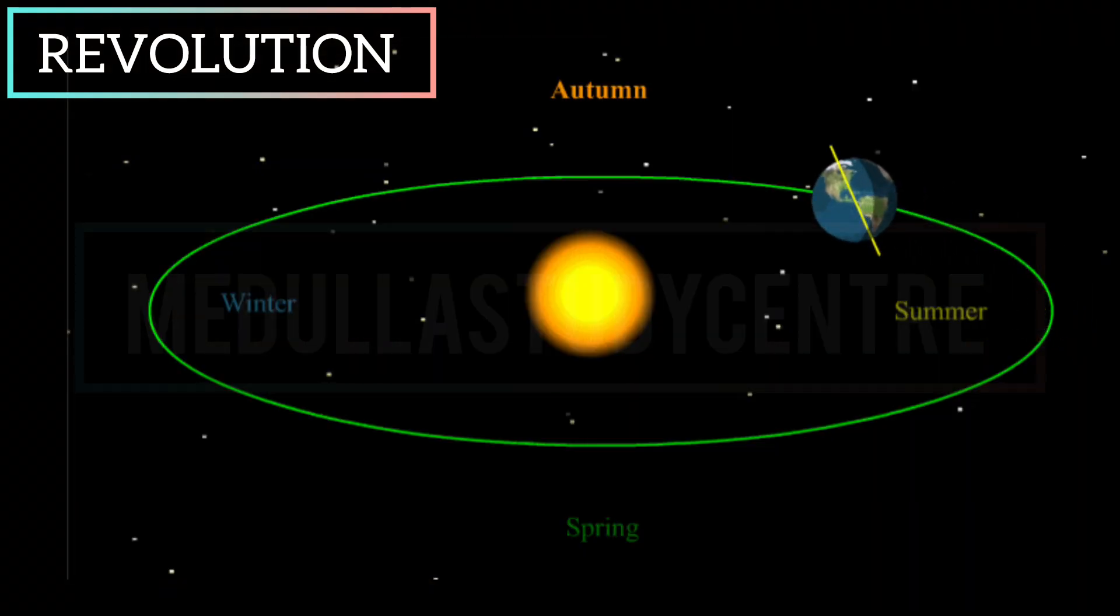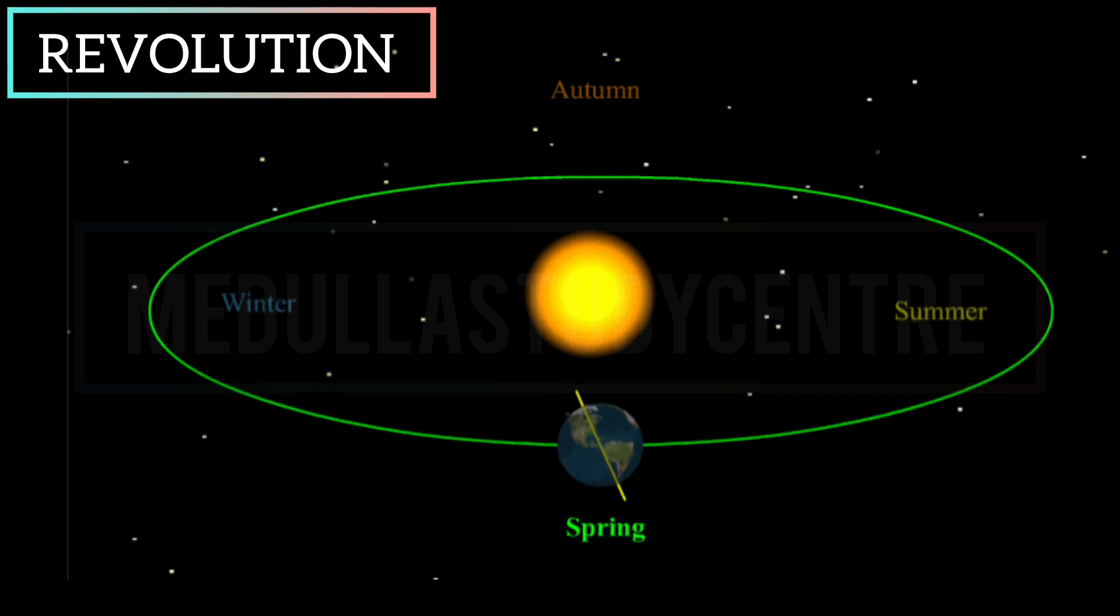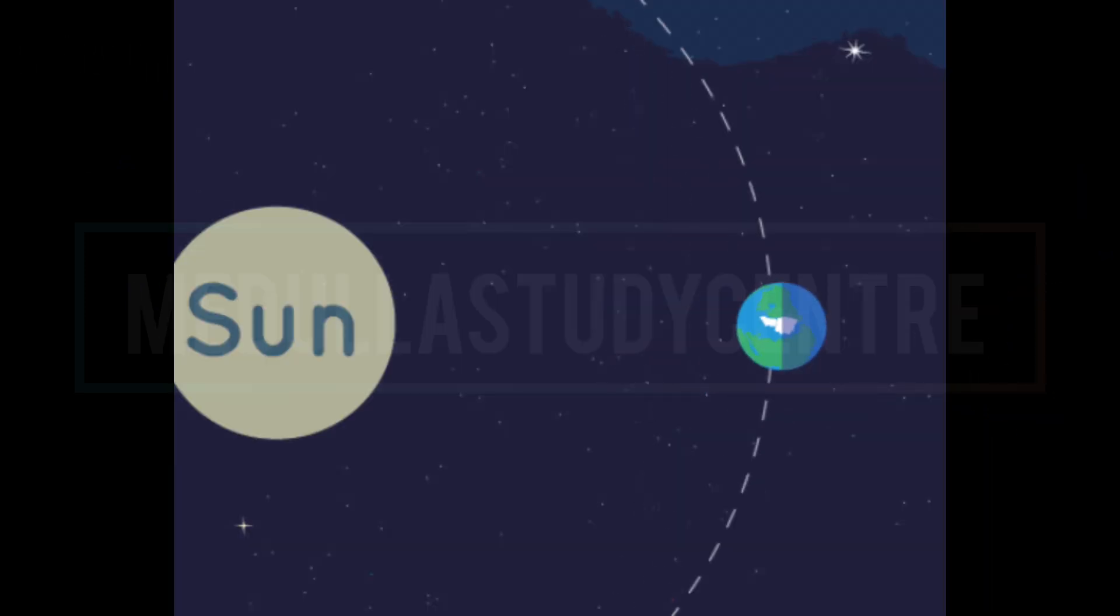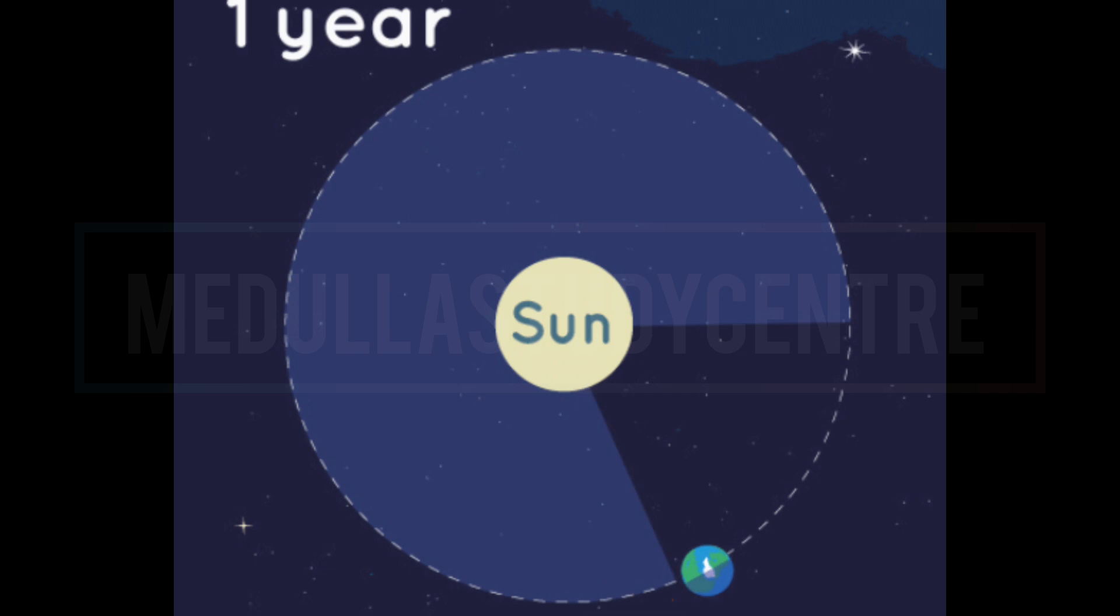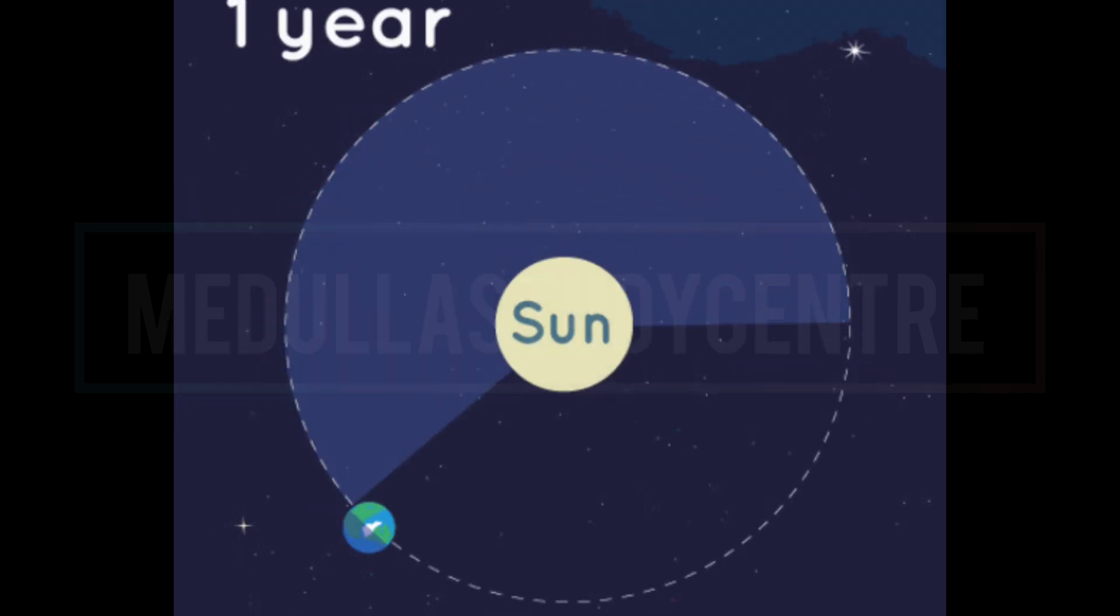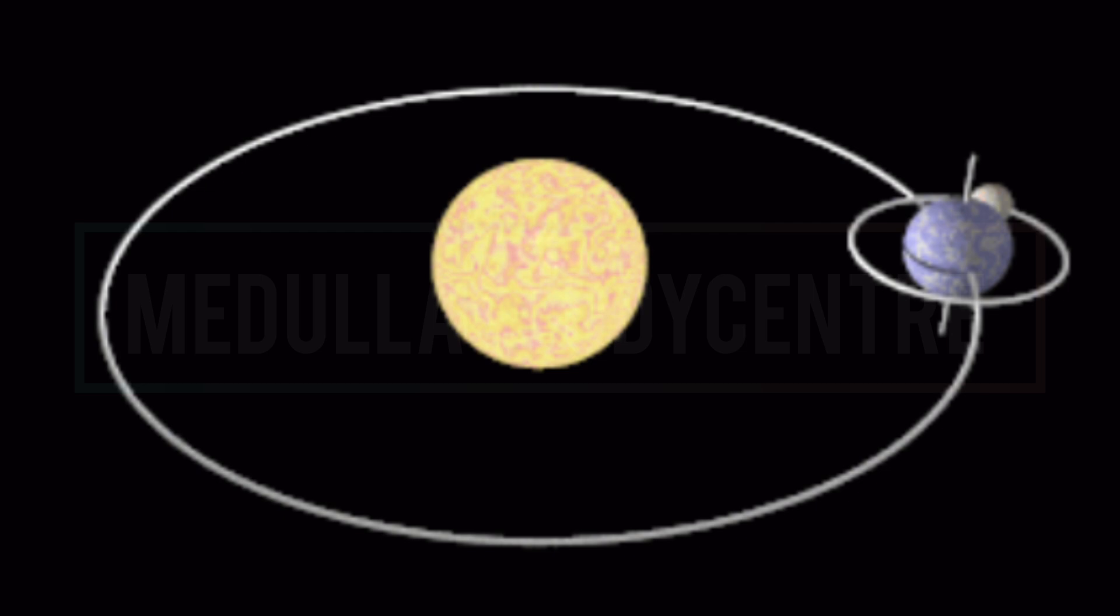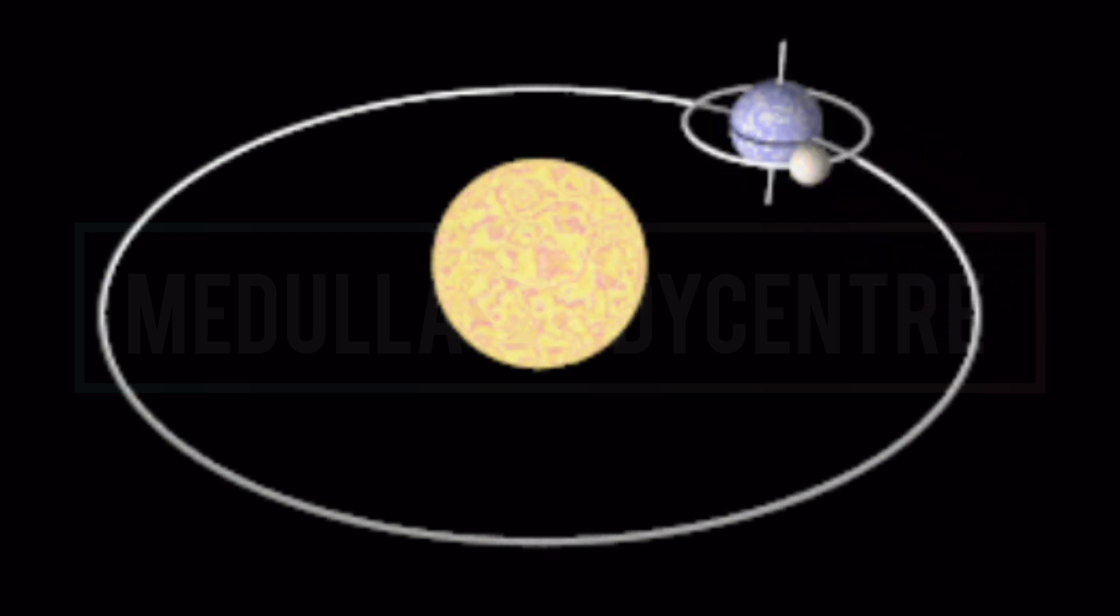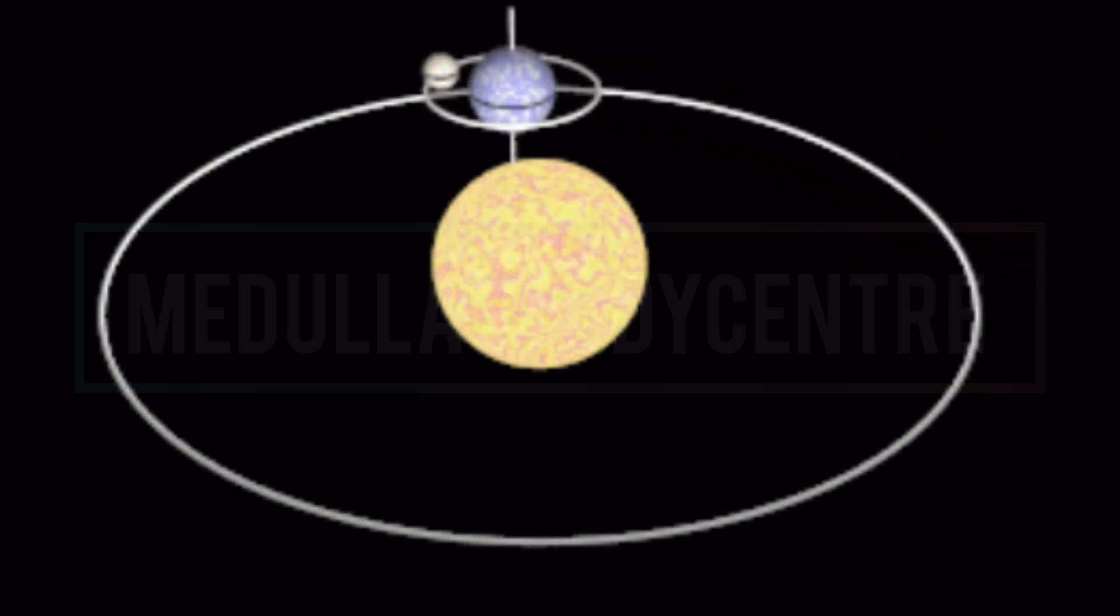Seasons change due to the revolution of Earth that we experience whole year. Our Earth takes 365 days and 6 hours to complete one revolution around the Sun. So children, we saw that the Earth makes two movements together, rotation and revolution.